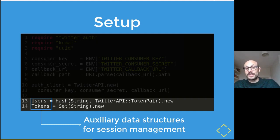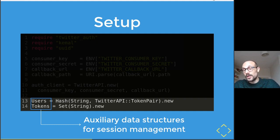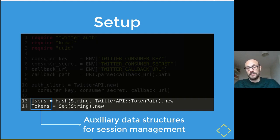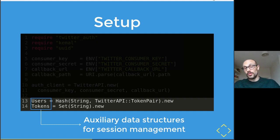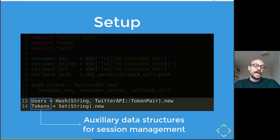I'm defining two simple data structures. The first, users, is a hash from a string representing your application's tokens to the Twitter API credentials. The second, tokens, is a collection we use to verify that any authentication flow was indeed initialized by our application. These serve the purpose for a basic example, but ideally you'd use thread-safe data structures backed by a database like Redis, so that multiple instances behind a load balancer share the same view of tokens and users.